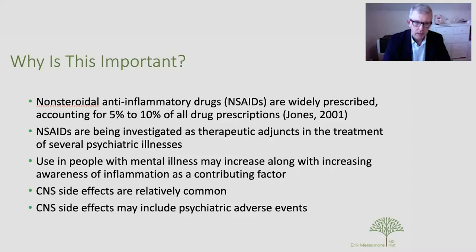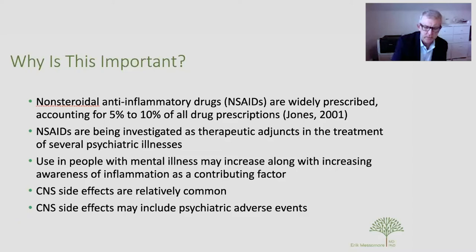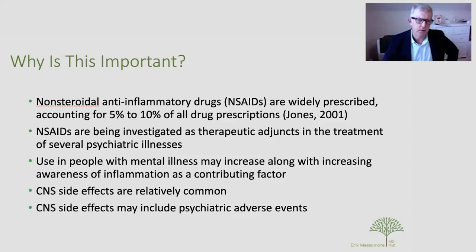If you look in the psychiatric literature, you'll find many papers these days saying that adding an NSAID — such as aspirin or celecoxib — to an existing antidepressant or antipsychotic drug on average seems to have a benefit for at least a significant portion of individuals. Most of the press and most papers coming out are favorable to the use of NSAIDs as augmenting agents.